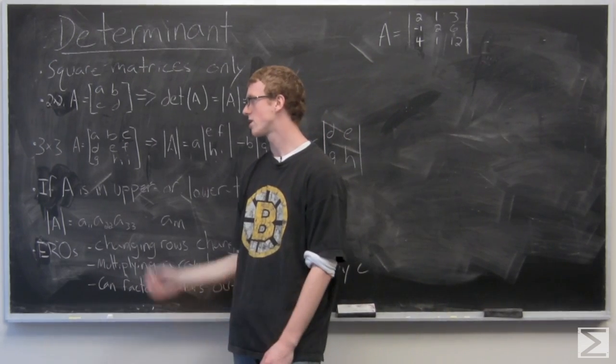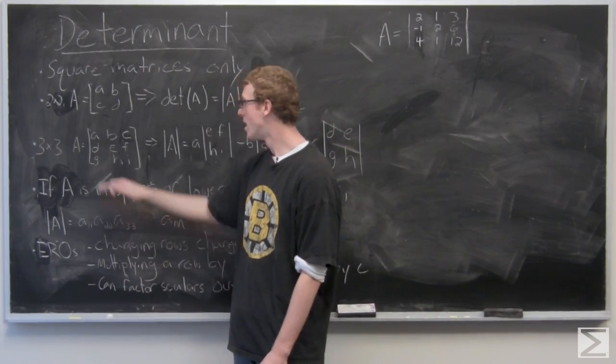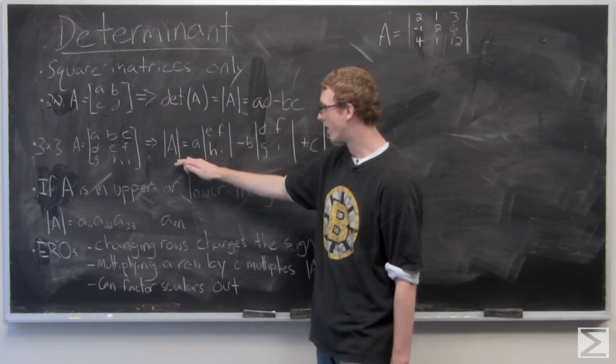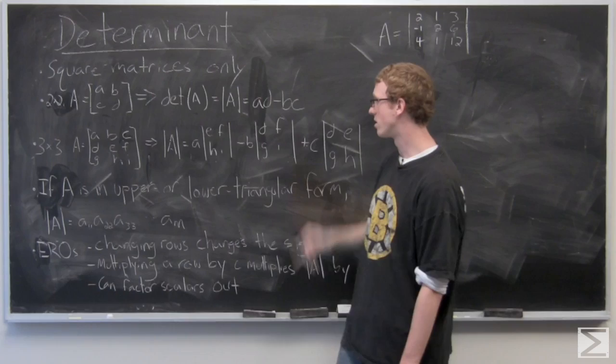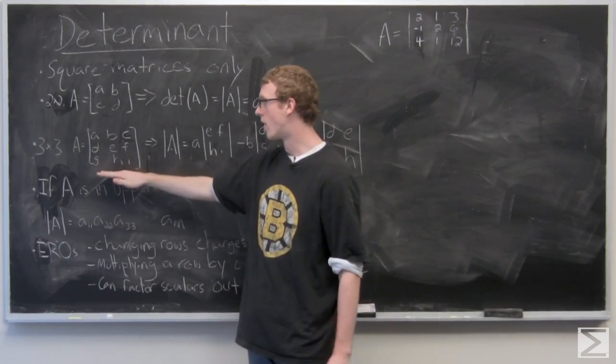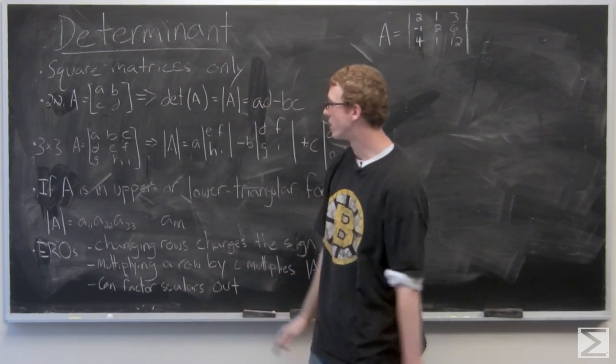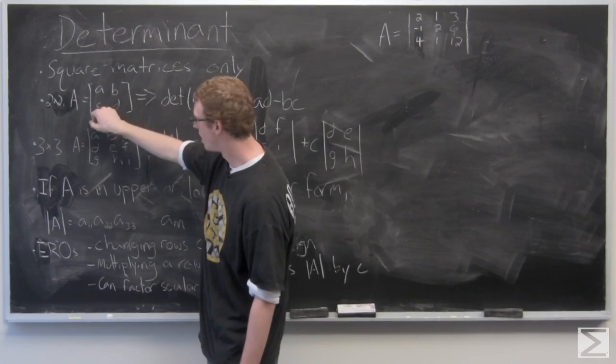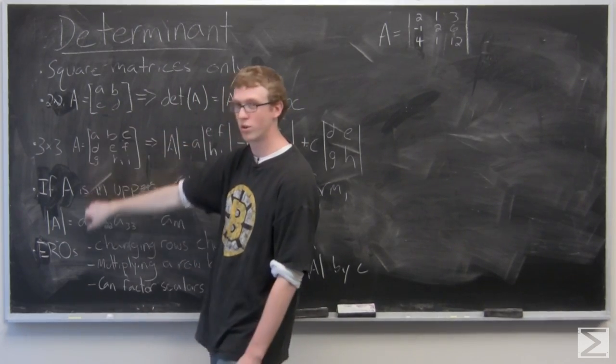For a three by three matrix, it's a little bit more complex. Essentially what you do is you remove the first row, so you have A, negative B, positive C, and then you have the two by two matrices that are on the bottom two rows. So when you take out A, essentially what you're doing is crossing out the top row in the left, or the top row in the leftmost column.